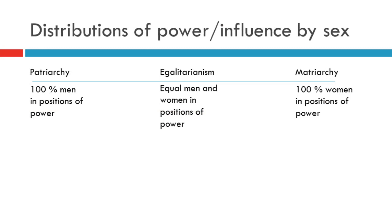If we map out the ways that political power or other forms of power can be distributed on the basis of sex, we have two extreme types and then a median point. On the two extremes are 100% men occupying positions of power and influence, and on the other side 100% women, with an equal distribution of around 50-50 at the absolute median point.